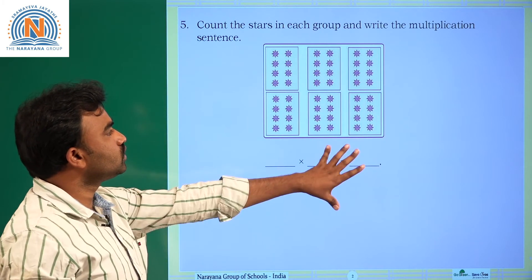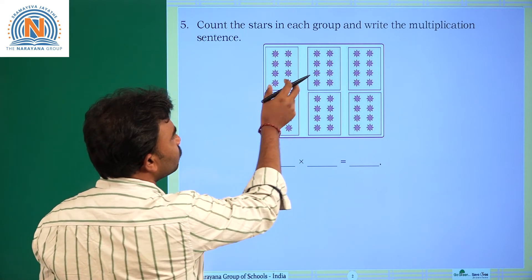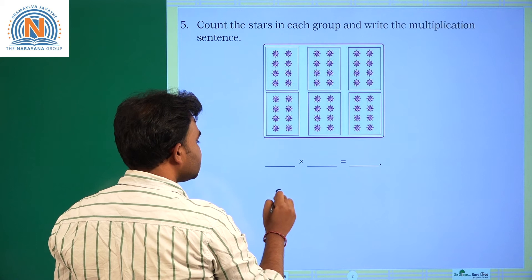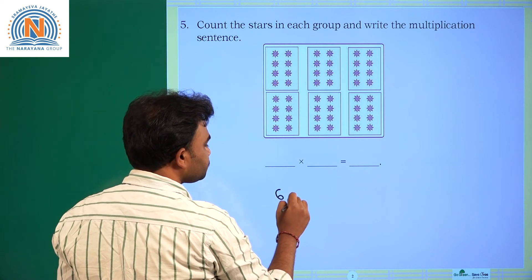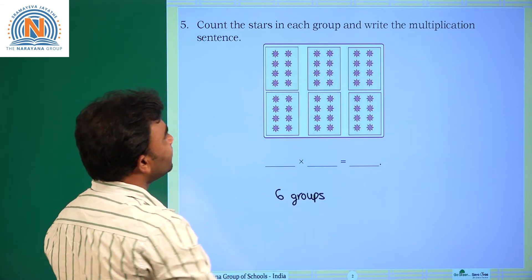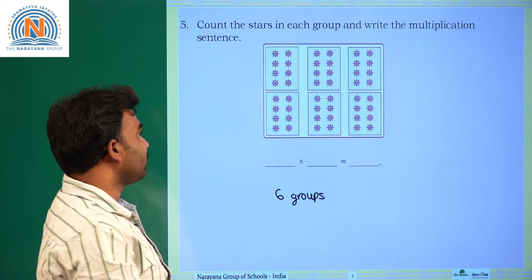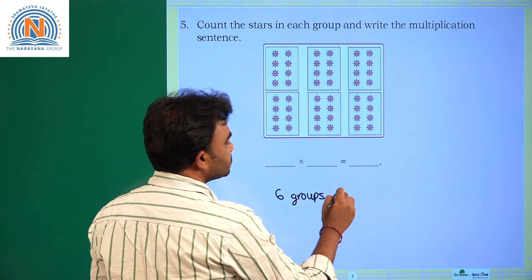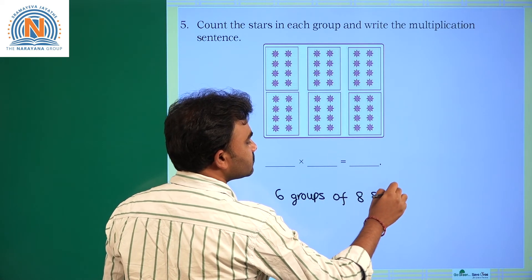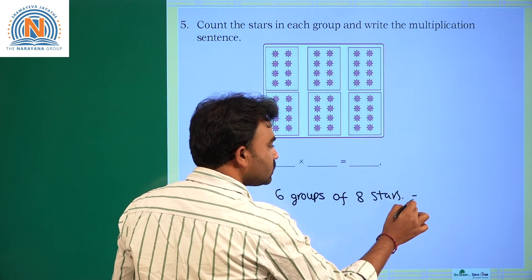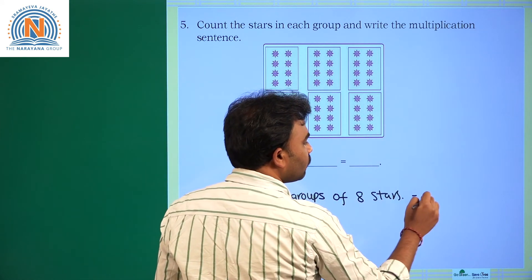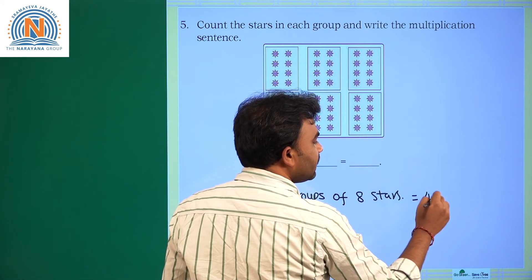Total, how many groups are there? One, two, three, four, five, six — six groups. Each group is having eight stars, so six groups of eight stars. The total number of stars is 48.